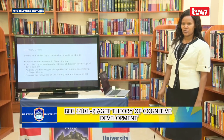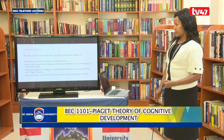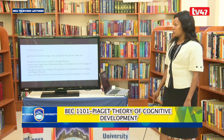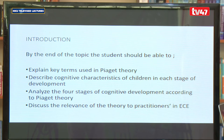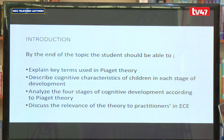These are theories that help us to understand how children develop cognitively from birth. In this particular topic, I would like us to be able to explain key terms used in the theory, describe cognitive characteristics of children in each stage of development, analyze the four stages of cognitive development according to Piaget's theory, and discuss the relevance of the theory to practitioners in early childhood education.